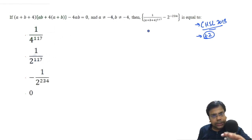These questions can appear even in CSAT or RBI grade B. This is one of the best questions because it's one of the easiest questions. We have one condition: a not equal to minus 4, b not equal to minus 4, and we need to find the value of 1 upon a plus b plus 4 raised to power 117 minus...